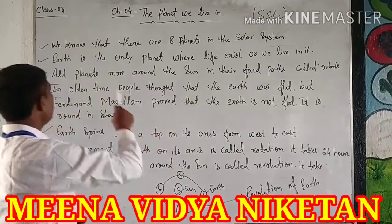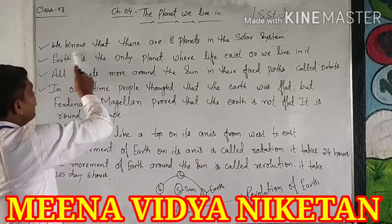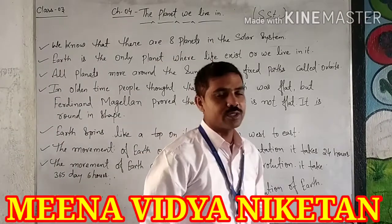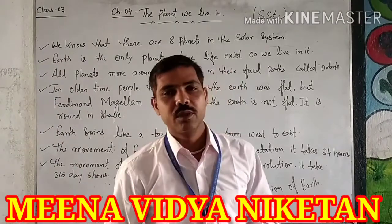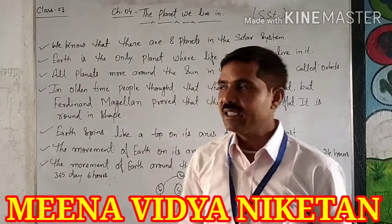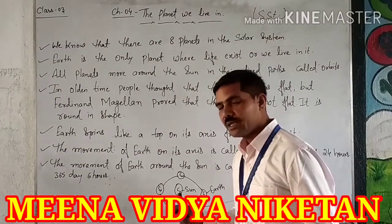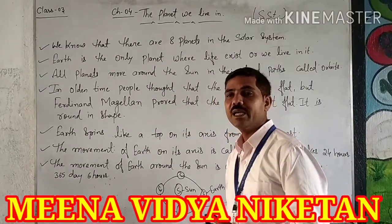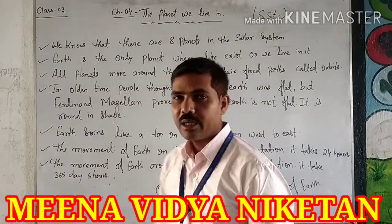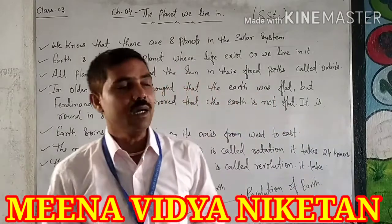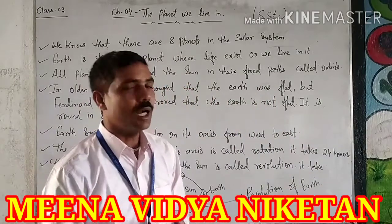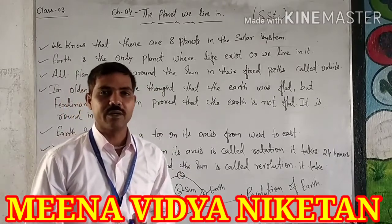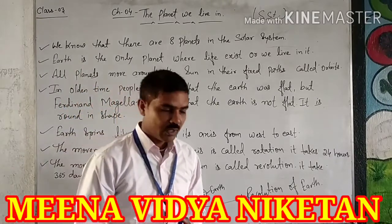The first point: we know that there are 8 planets in the solar system. Today we will study about our planet in the solar system, which is planet Earth — the one planet on which we live.